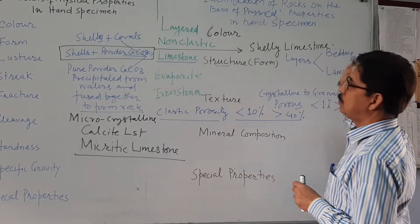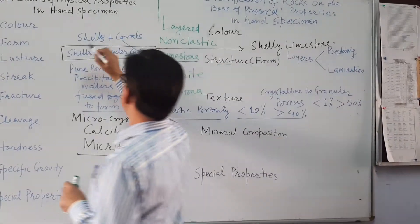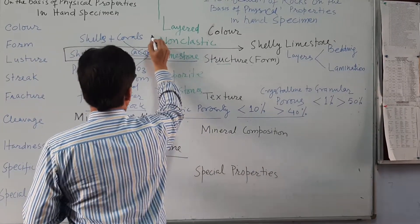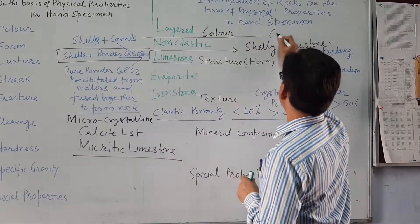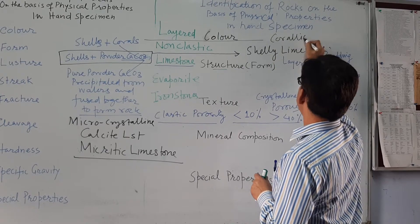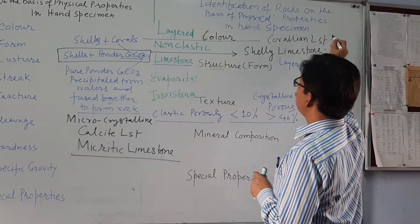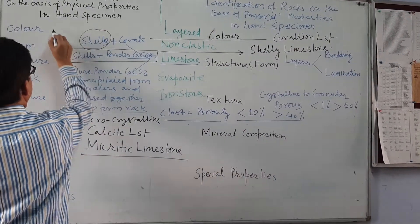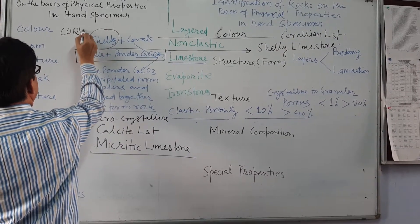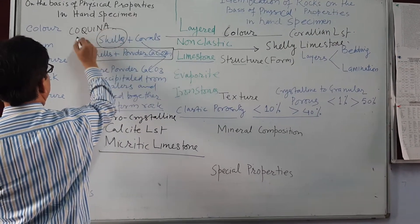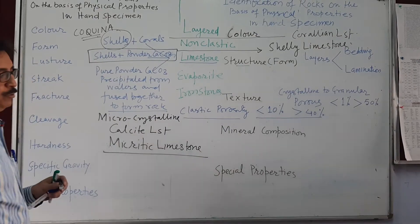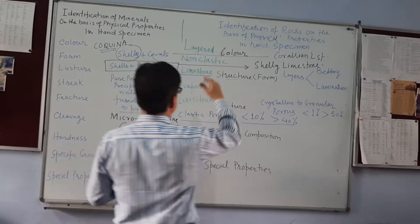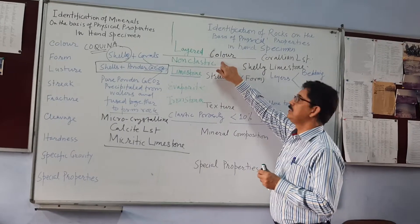If limestone is made up of corals then it is called corallian limestone. If it is made up of only shells, then I have shown you a sample that is known as coquina. Now the colors may vary depending upon the depositional condition.